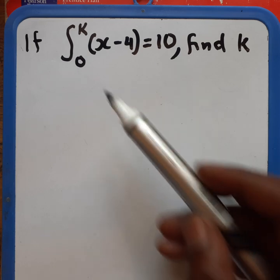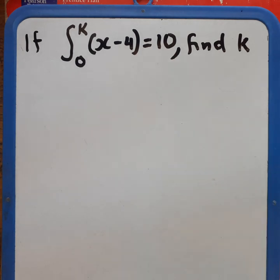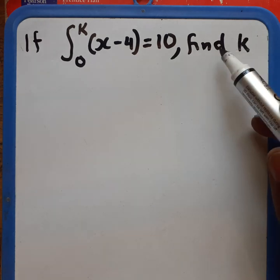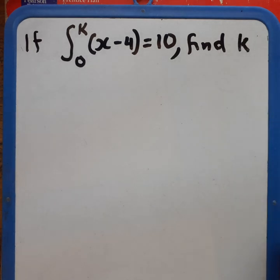As you can see, one of the limits is not given, but we are given the value that you get after integration. So we need to find now the upper limit, which is the value of k. What is the value of k? That is what we want to find.